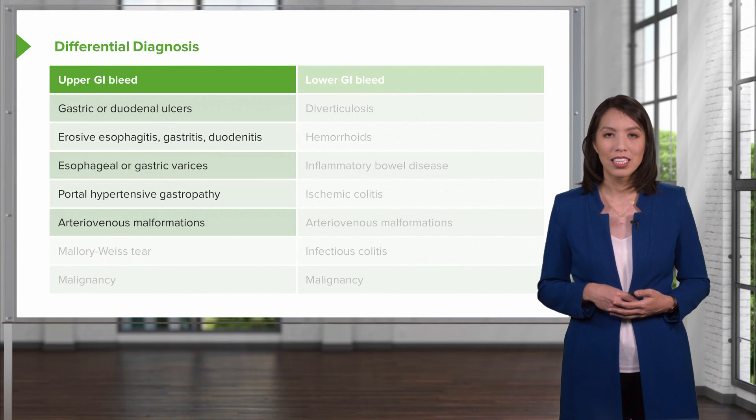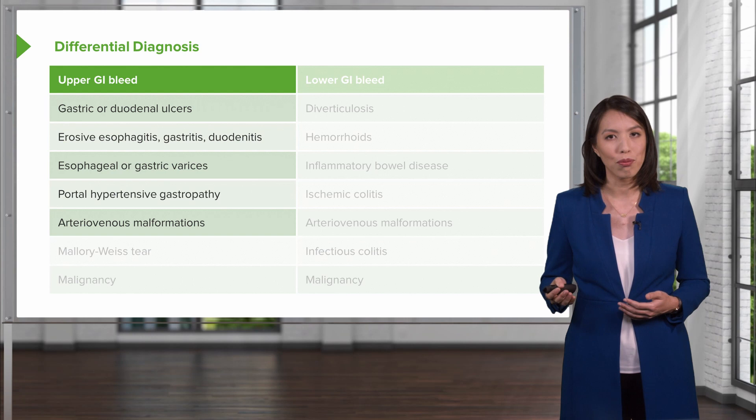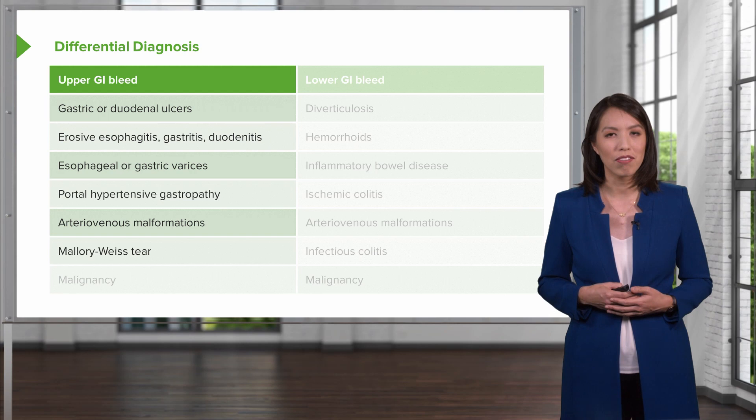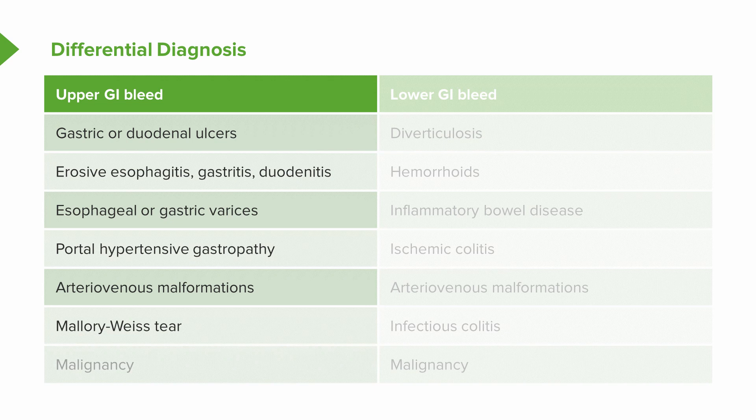Arteriovenous malformation, or AVM, is a rare but always present cause of GI bleeding that should remain on the differential. If the patient describes frequent vomiting prior to presenting with bleeding, suspect a Mallory-Weiss tear. And cancer should always be on the differential.